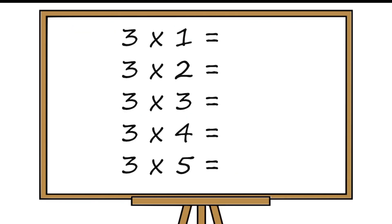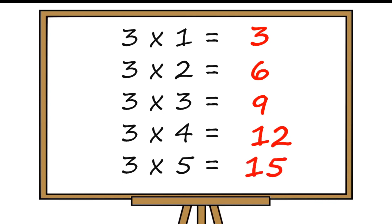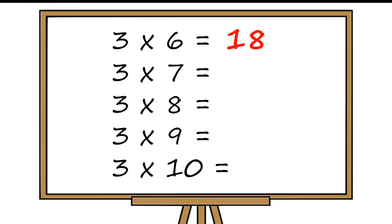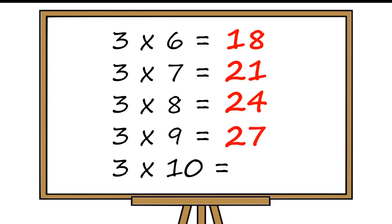Let us know this three times table in a tune. Say after me. Three ones are three. Three twos are six. Three threes are nine. Three fours are twelve. Three fives are fifteen. Three sixes are eighteen. Three sevens are twenty-one. Three eights are twenty-four. Three nines are twenty-seven. Three tens are thirty.